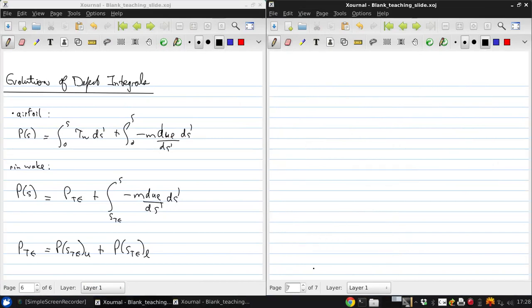We can do the same for the kinetic energy equation for incompressible flow, and get k of s is equal to the integral from 0 to s of the dissipation integral on the airfoil or body.